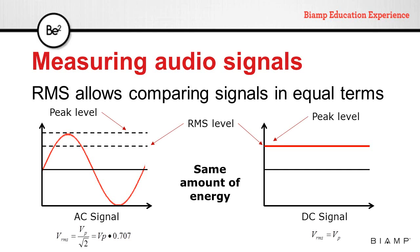In the case of a sine wave, the RMS value can be calculated with the formula shown on screen. In the case of a DC signal, the RMS value is equal to the peak value.